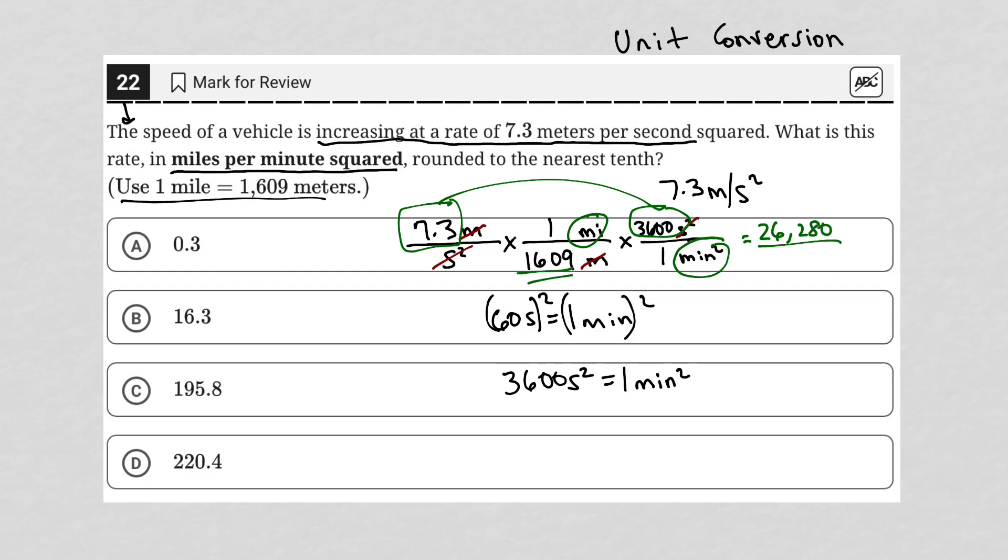Of course, I'm still dividing that by 1,609. Let's divide this in my calculator by 1,609. I get 16.33312 and some other numbers there. And we want to the nearest tenth, the question says.